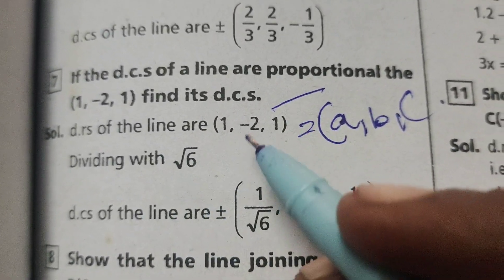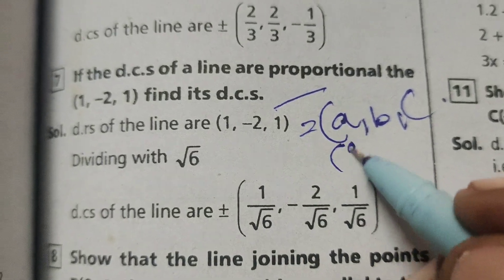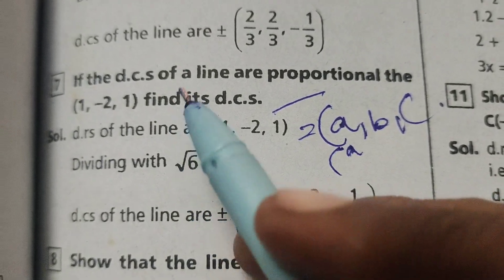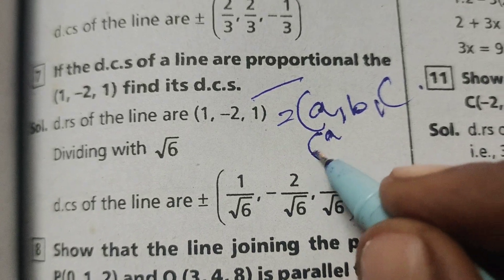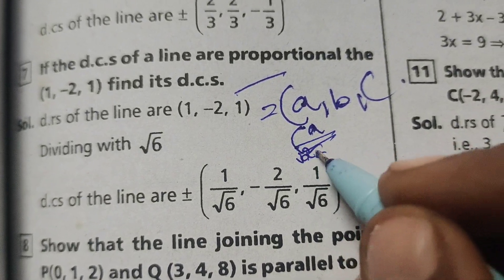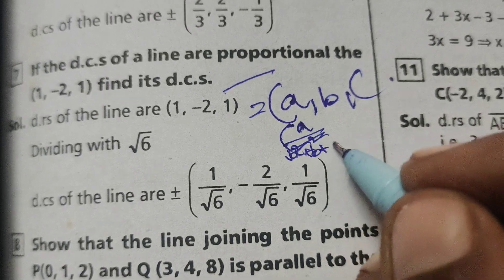Dividing by root 6 means formally, here, direction cosines of the line are a by root of a squared plus b squared plus c squared,